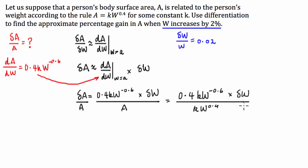Now, using some math that you hopefully learned when you were 12 years old, we can cancel out the k's, and we can use the index law to simplify this expression. We have 0.4W to the negative 0.6 subtract 0.4 times delta W. And this is equal to 0.4W to the negative 1 times delta W.